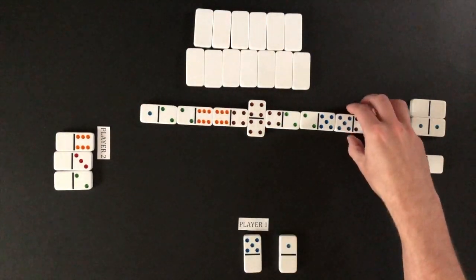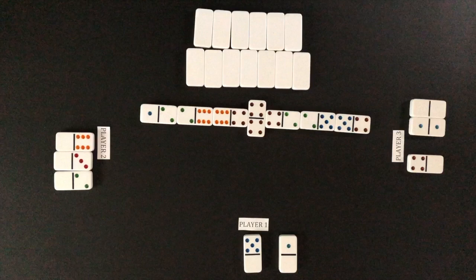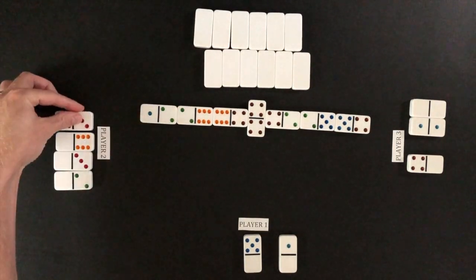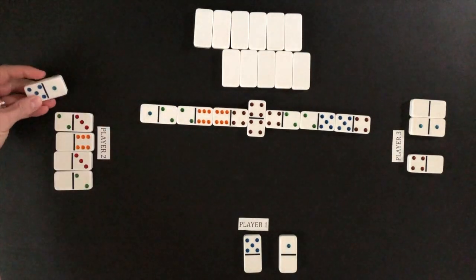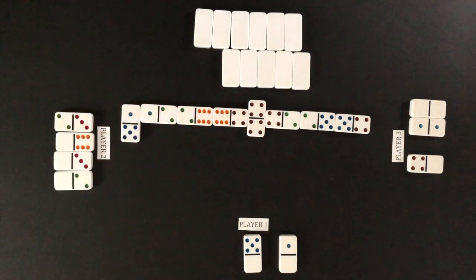Play returns to player two who cannot match on either open end. Player two will draw from the boneyard. Player two continues to draw until a match is found. Player two is able to play the second domino drawn.